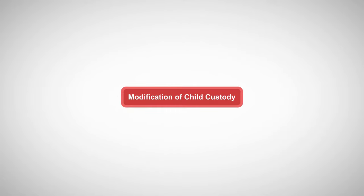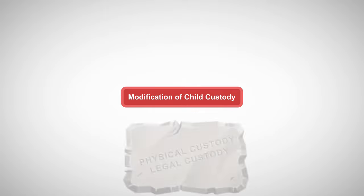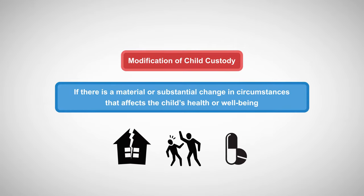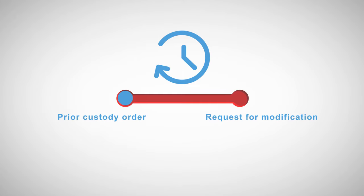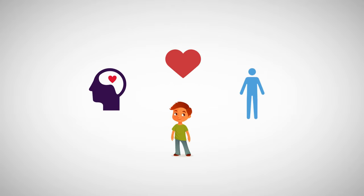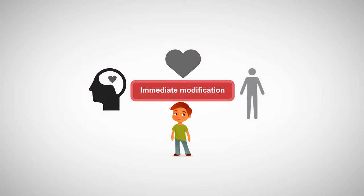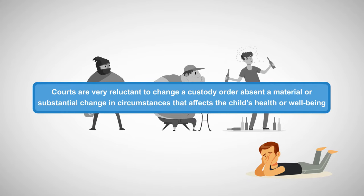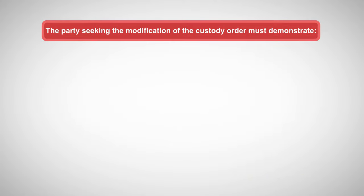Though it may appear as though a physical or legal child custody arrangement is a final judgment, neither of these two orders are set in stone when initially decided. Custody orders can be modified if there is a material or substantial change in circumstances that affects the child's health or well-being. Some statutes require a certain amount of time to elapse between the prior custody order and a request for modification. Despite this, if the child's mental, emotional, or physical health is in harm's way, a custody order can be modified immediately. Because extreme changes in custody can be traumatic for children, courts are very reluctant to change a custody order absent a material or substantial change in circumstances.